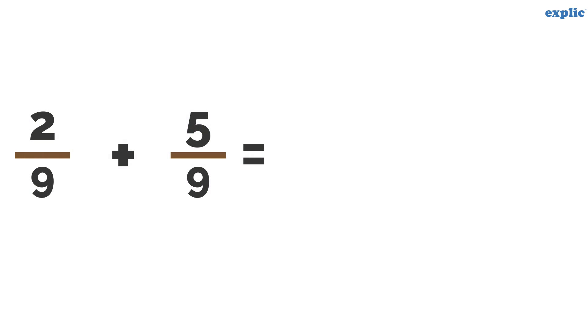To add 2 by 9 and 5 by 9, just add 2 and 5 and write as the numerator. Write the common denominator. The answer is 7 by 9.